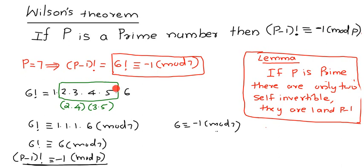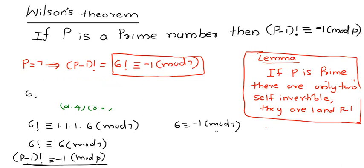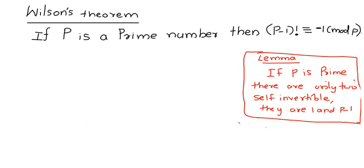We use the same approach to prove this result generally. We took pairs from 2 to 5 (excluding 1 and 6), and each pair becomes 1: 2 × 4 ≡ 1 and 3 × 5 ≡ 1 modulo 7. In general, we can pair the product such that each pair becomes 1. Now we prove the statement generally.